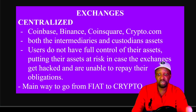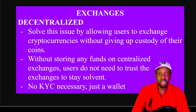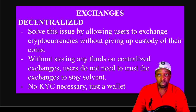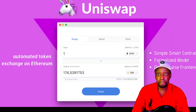A downside of centralized exchanges is you have to KYC — send your passport, scan your face — and wait for withdrawal processing. Decentralized exchanges solve this by allowing users to exchange cryptocurrency via a smart contract in the middle without giving up custody. Because coins stay in your wallet, you don't need to trust the exchange's solvency and no KYC is required. You can open a wallet in minutes. Uniswap is an example — at one point it handled 80% of crypto volume and is the number one Ethereum DEX.